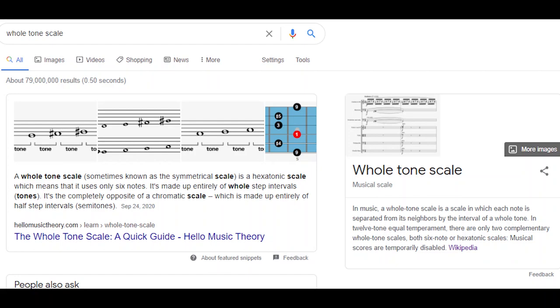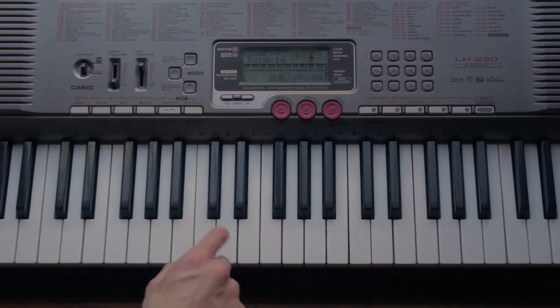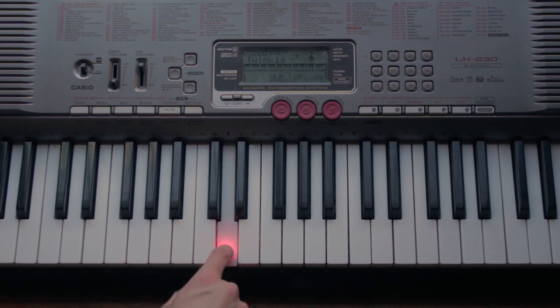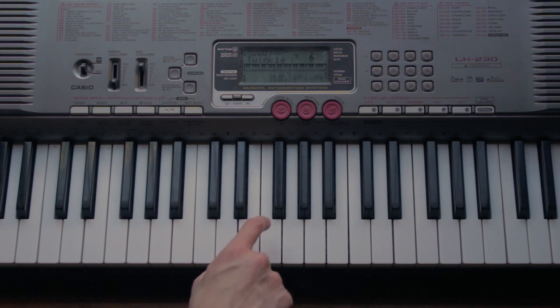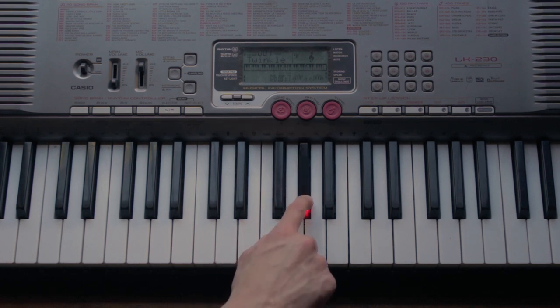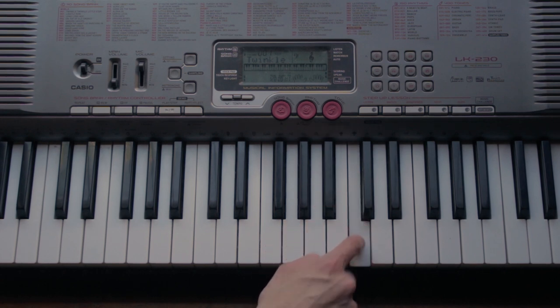Here Nick is using something called a whole tone scale. For those of you who don't know, the structure of a whole tone scale is just all whole tones — it has no semitones. So if our first note is C, then we move one whole step to D, another whole step to E, another whole step to F sharp, G sharp, A sharp, and then back to C.